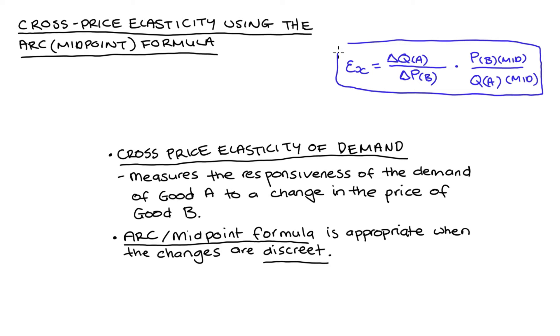So we have the two goods, good A and good B, and in our formula we're going to take the discrete change in the quantity demanded of good A, we divide it by the change in the price of good B, then we multiply that fraction by the midpoint of the price change of good B, divided by the midpoint of the quantity change of good A.